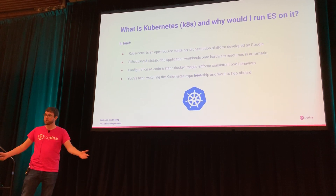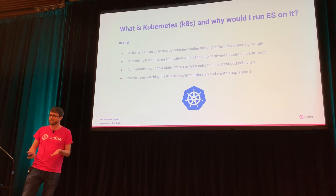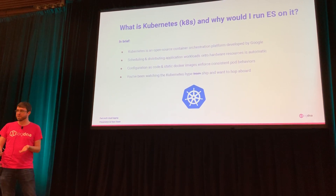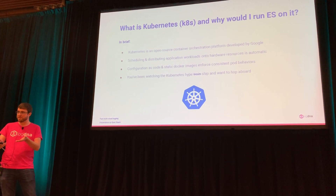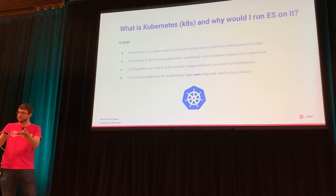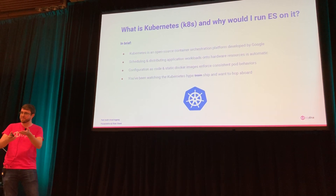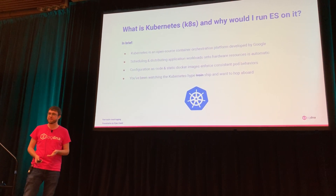So, Kubernetes. Why would you want to run Elasticsearch on Kubernetes? I mean, it's already a JVM. Do you want to add another JVM and then another VM and a Docker layer and a VM that the Docker layer runs in? It seems like a lot of VMs, right? But there are benefits.